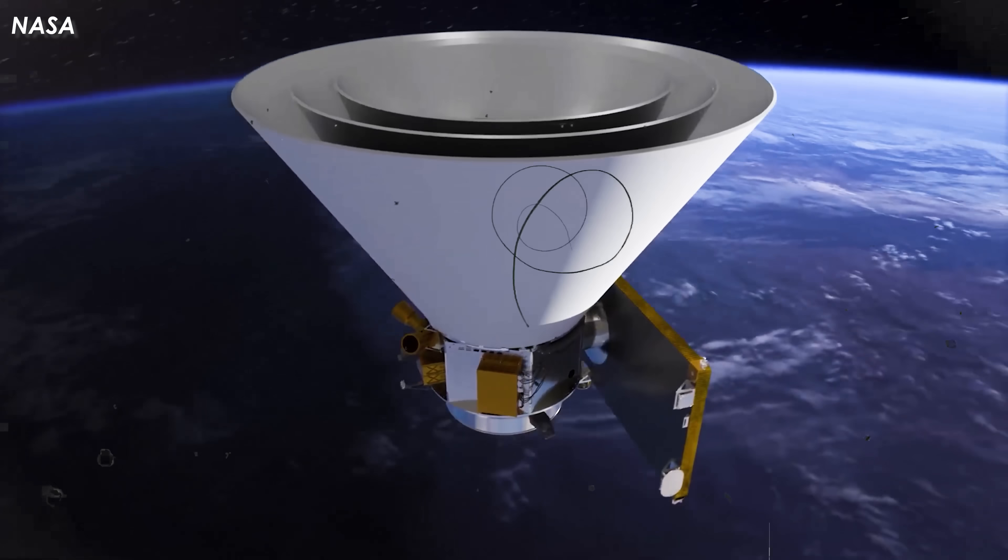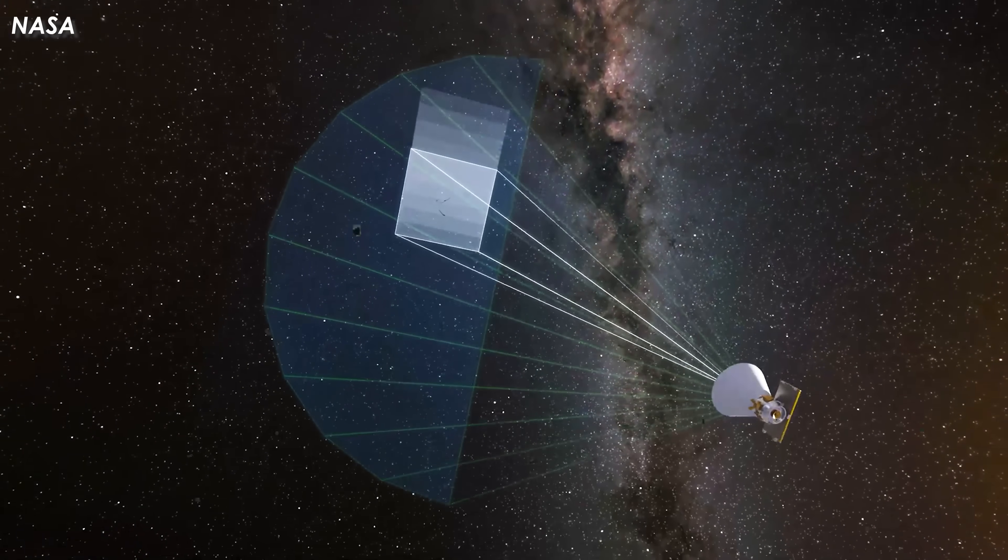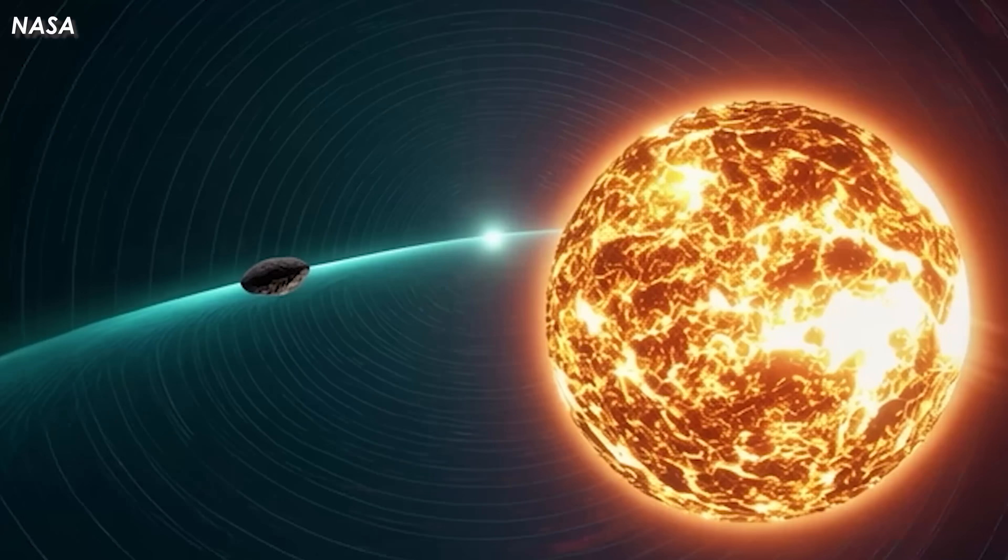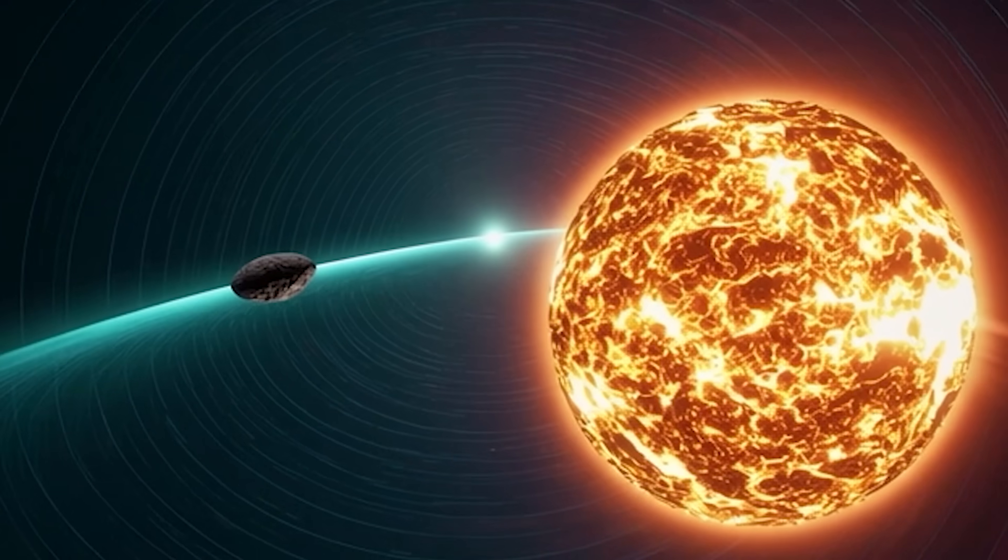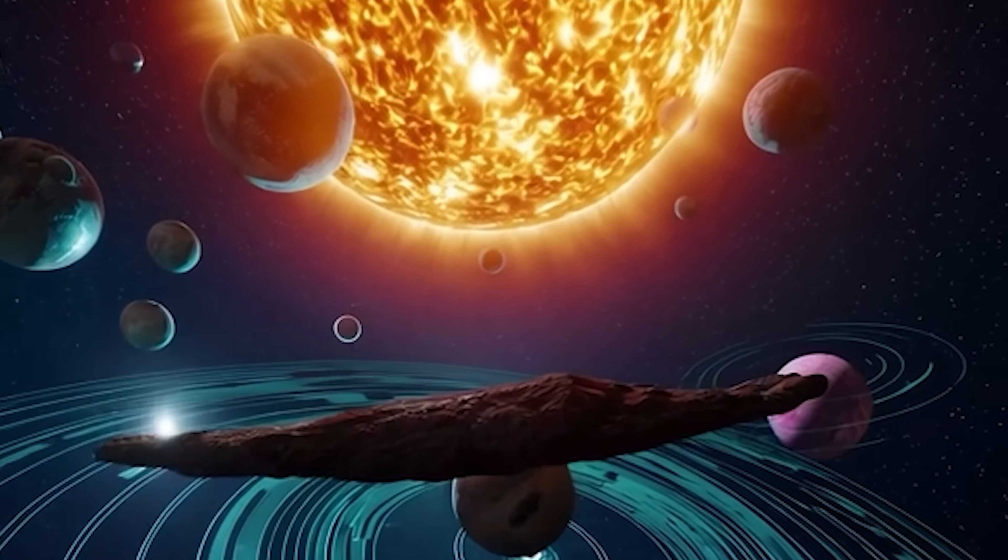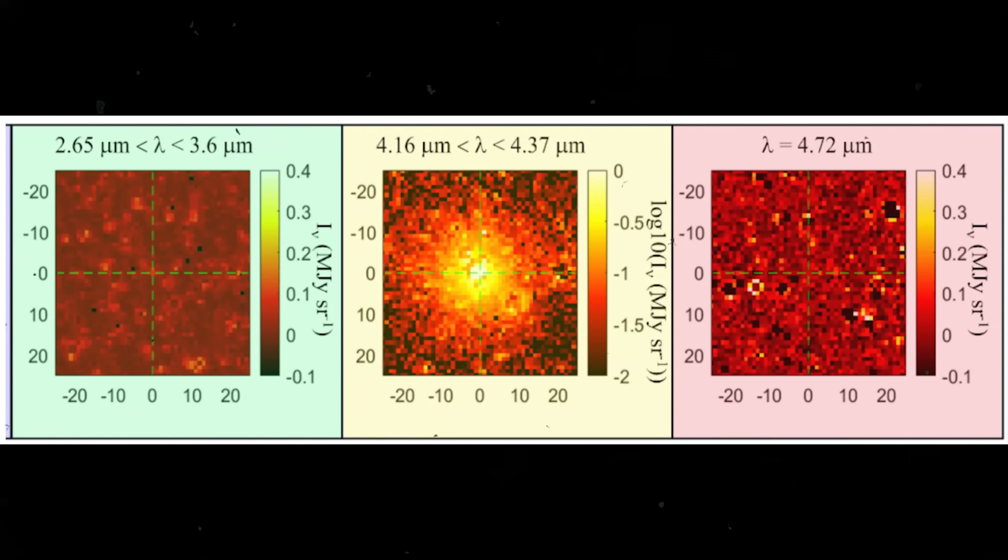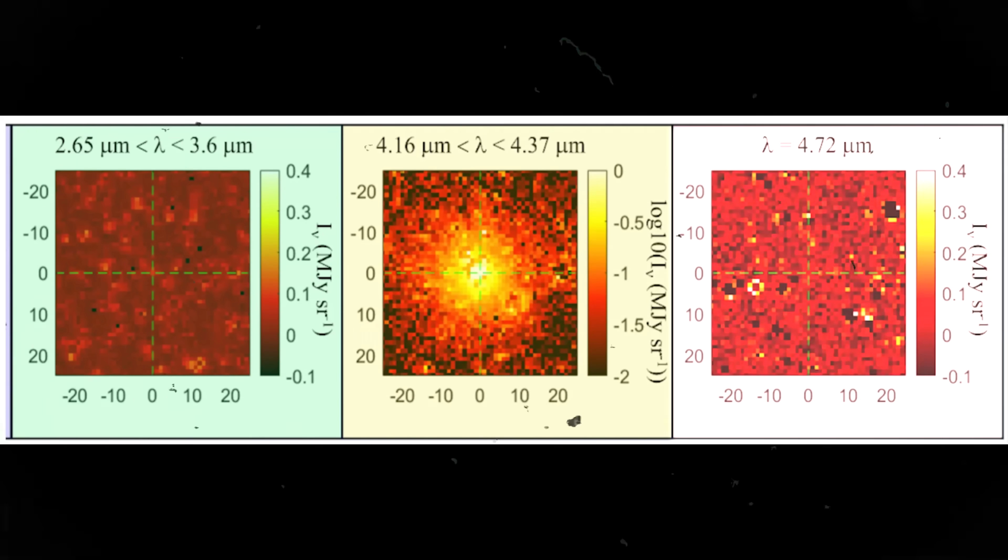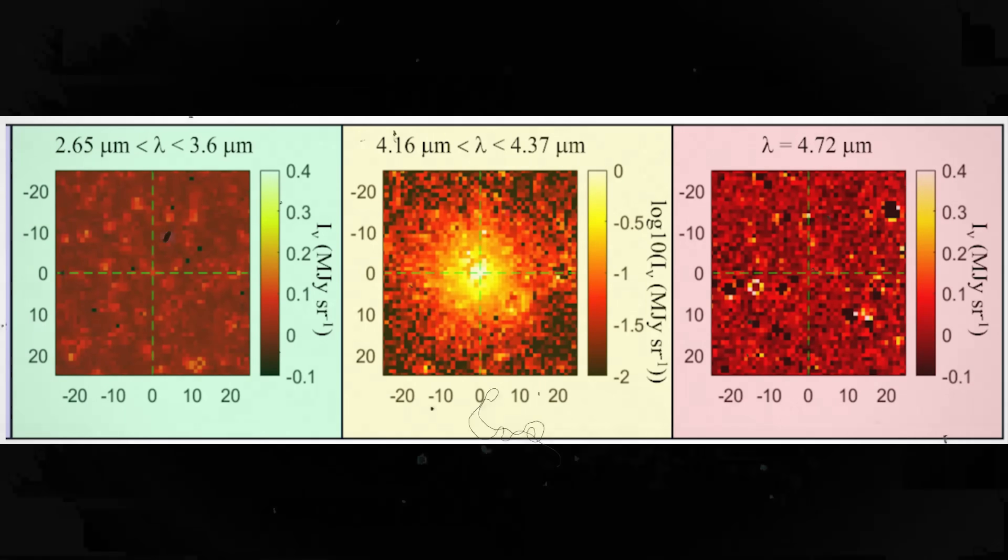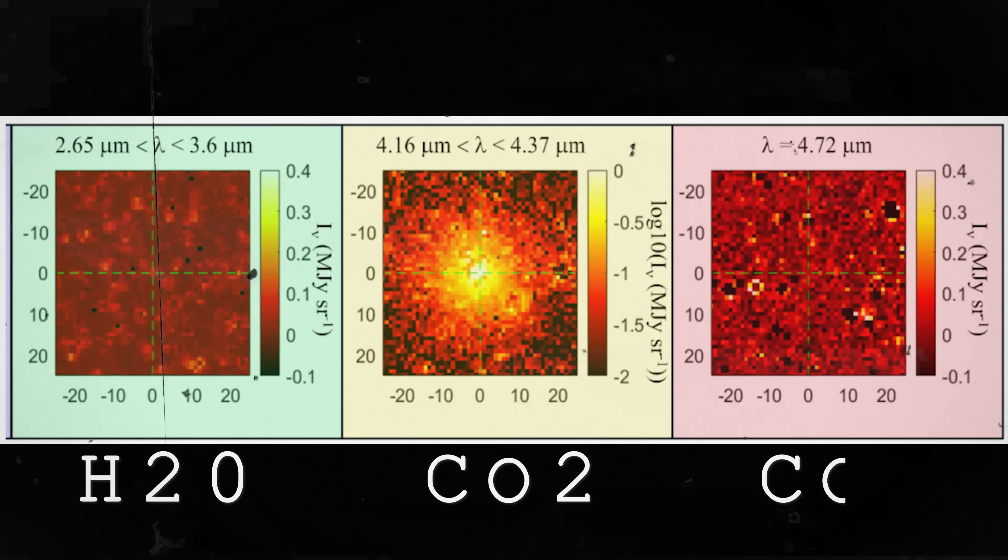Recently, Professor Avi Loeb shared something truly fascinating. A NASA team working with the SPHERE-X Space Observatory has just reported fresh data on the mysterious interstellar visitor, 3I Atlas, between August 8th and 12th, 2025. When 3I Atlas was about 3.2 astronomical units from the sun, SPHERE-X captured three infrared images at wavelengths of 3.0, 4.26, and 4.7 micrometers. These wavelengths correspond to the emission lines of water vapor, carbon dioxide, and carbon monoxide.